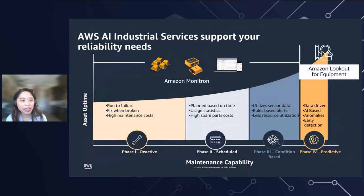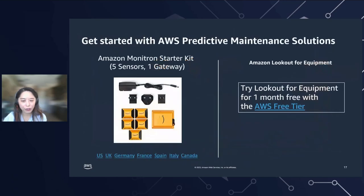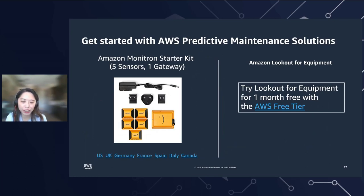In summary, AWS AI industrial services provide a suite of tools and applications like Amazon Monitron and Amazon Lookout for Equipment to assist you in your reliability journey as you mature in your maintenance and data strategy capabilities. If you want to try AWS predictive maintenance solutions, there are very cost-effective ways to start your journey. You can directly order an Amazon Monitron starter kit online from Amazon.com. For Lookout for Equipment, you can try the service for one month for free with an AWS free tier account credit. Maintenance leaders, please roll up your sleeves and start implementing a predictive maintenance program in your organization today.